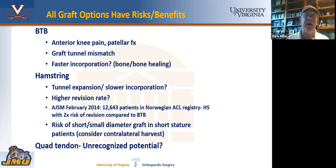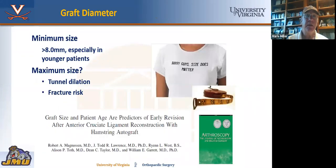Hamstrings are still popular, particularly for middle-aged folks, but they can be associated with tunnel expansion and may have a higher revision rate. It's important to get an appropriate size width. Quad tendons are becoming very popular and are good for revisions as well. We use them for revisions, though we have not adopted them as primary usually. For hamstrings, you need at least eight millimeters — or even 8.5 millimeters — in order to have a good outcome.